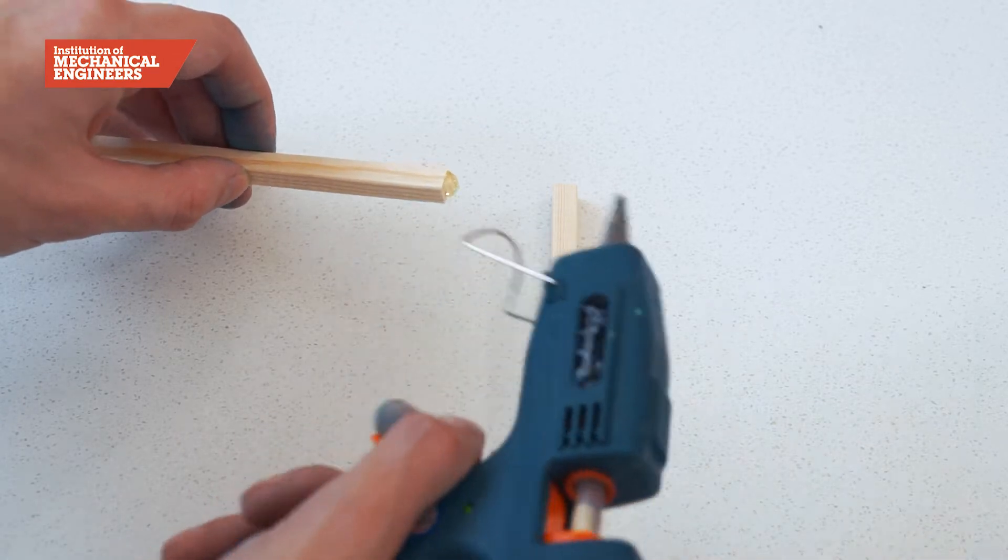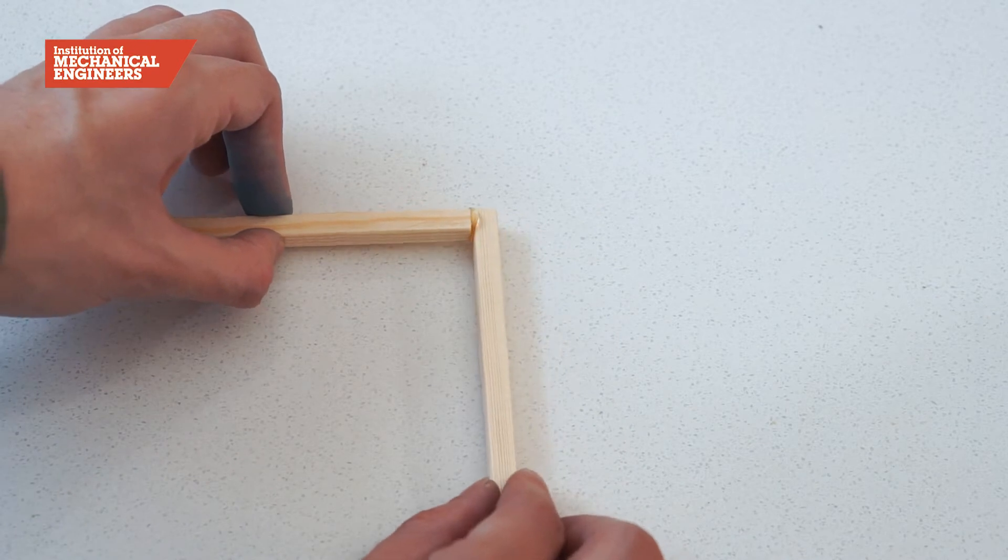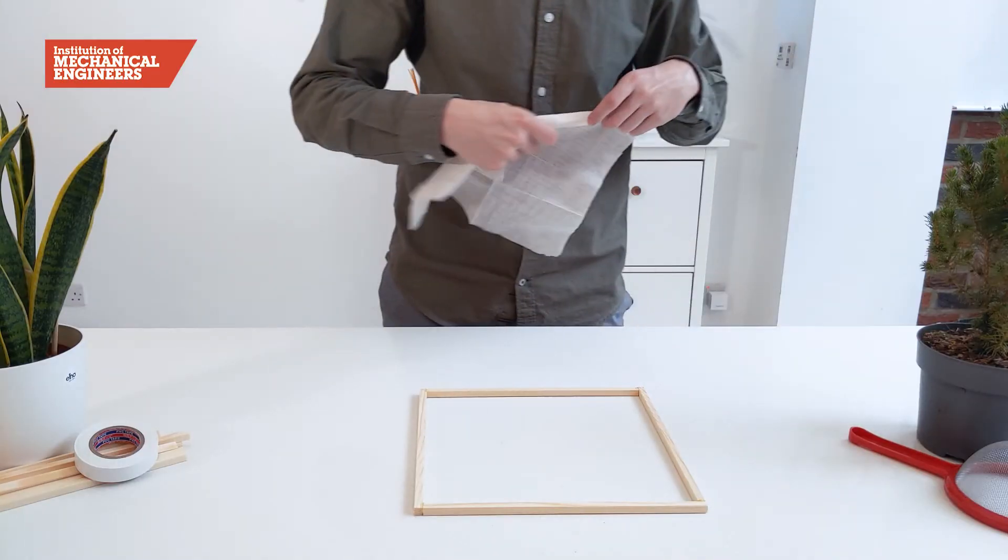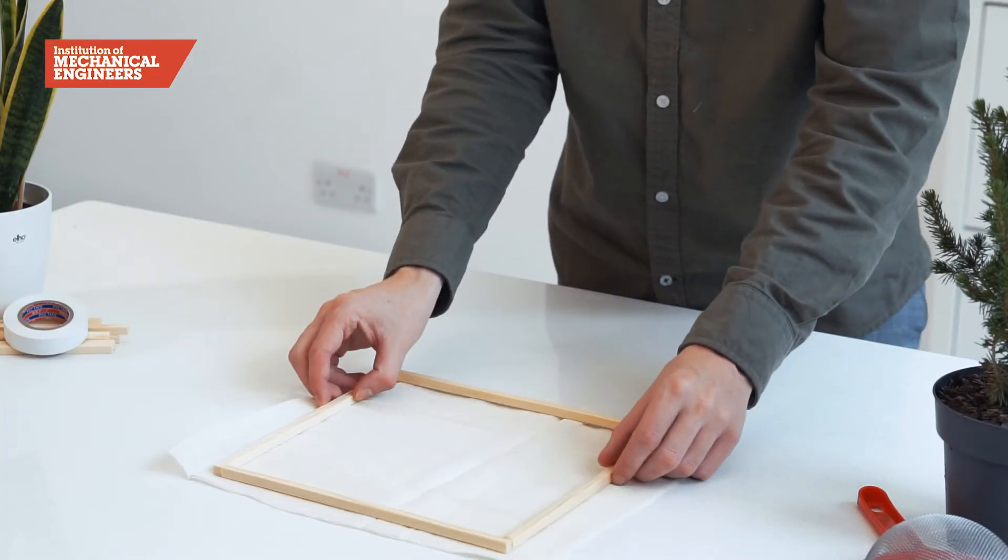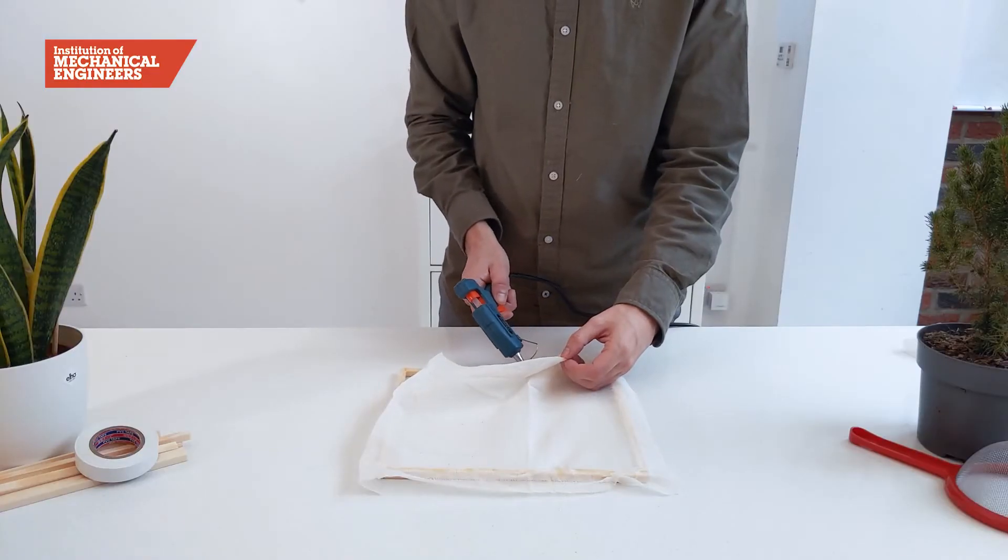If you have an old picture frame that you no longer need you could use this instead but make sure you ask an adult first and remove the glass window carefully. Then take your muslin cloth and stretch it tightly over the frame. Glue it down securely on each side with the hot glue gun.